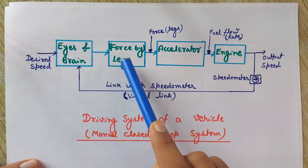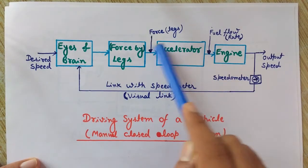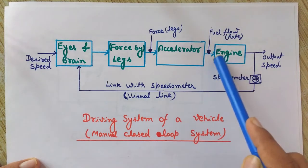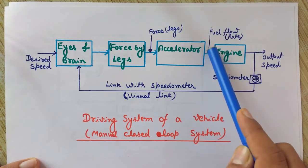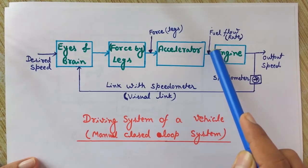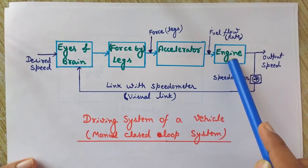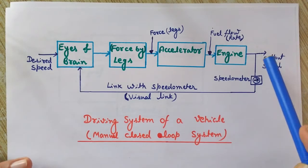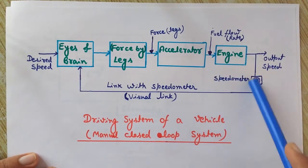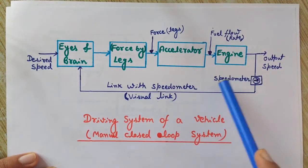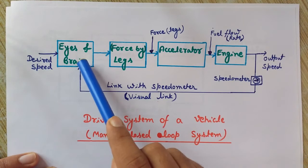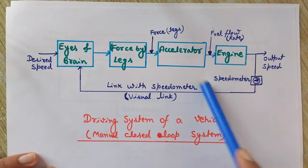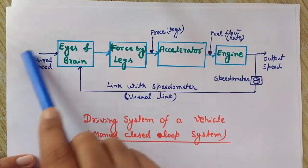According to what he wants to achieve, the driver exerts pressure with his legs on the accelerator. With this input force, the accelerator is pressed and the flow of fuel into the engine is varied. The speed of the engine changes, and the current speed at that moment is displayed on the speedometer, which the driver can watch.